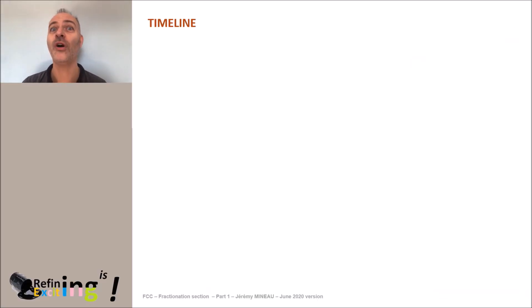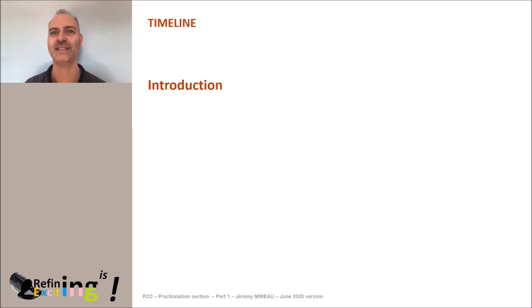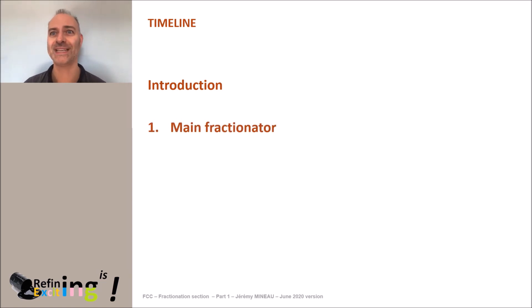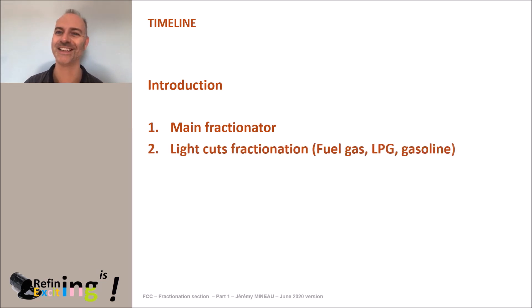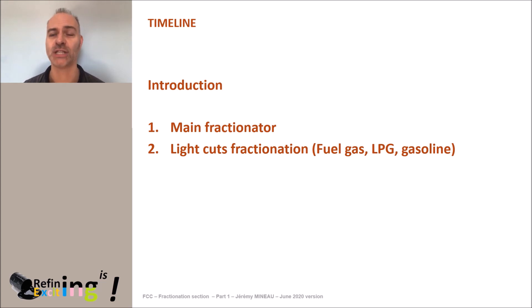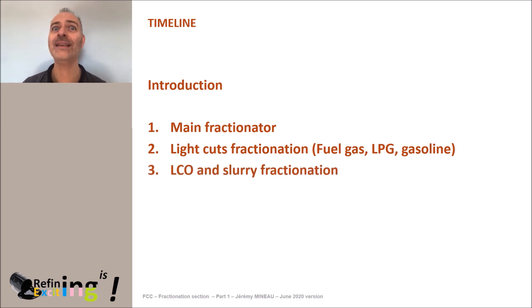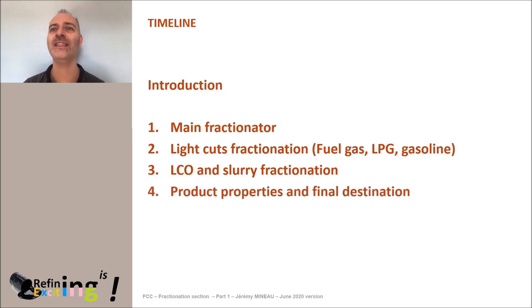In this MOOC, after a few reminders as an introduction, we will see how to separate all the molecules that have been cracked in the Reaction section. We'll start by talking about the main fractionation column, then the separation process of light cuts — namely fuel gas, LPG and gasoline. Then we will detail the production of heavier cuts, namely LCO and slurry.